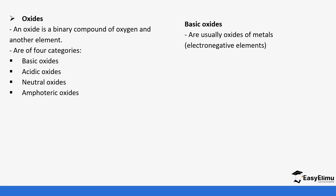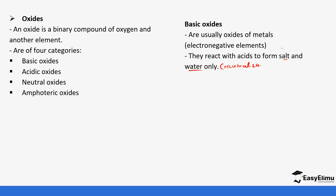Basic oxides are usually oxides of metals — metals which are electropositive. They react with acids to form salt and water. We've mentioned this before in Form 1. This is what we call the neutralization reaction.